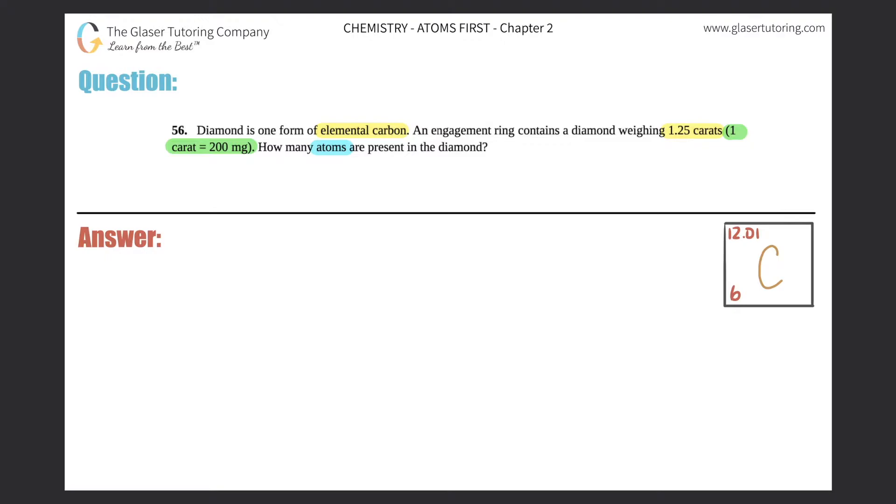Okay, so this looks like a conversion question, right? It's saying that we have an engagement ring that has a diamond that's weighing 1.25 carats, so I'm starting off with 1.25 carats, and they want to know how many atoms are present in this diamond.